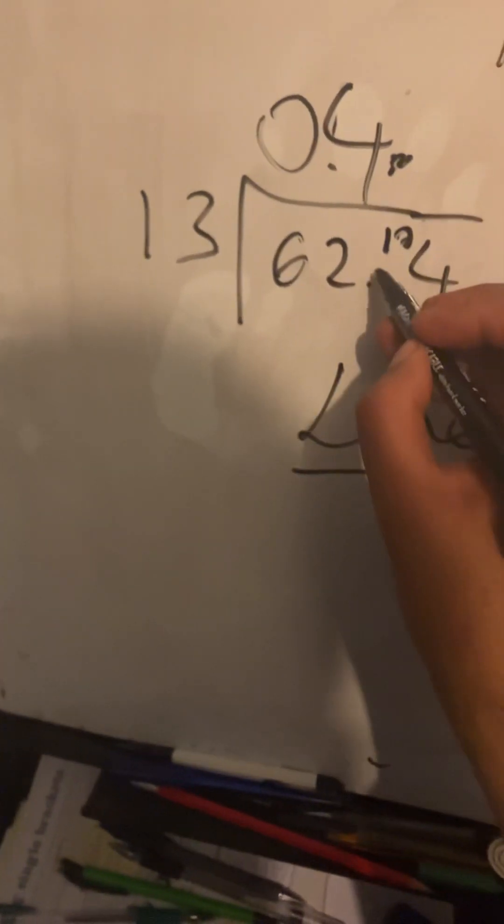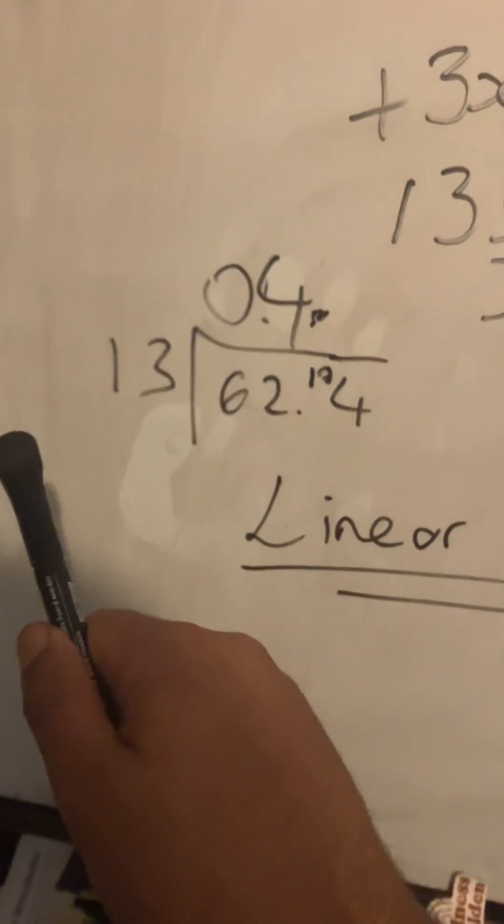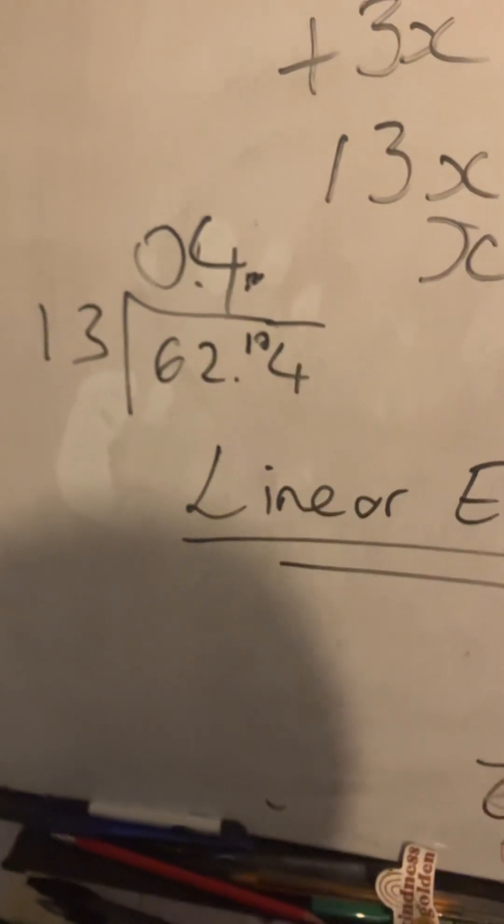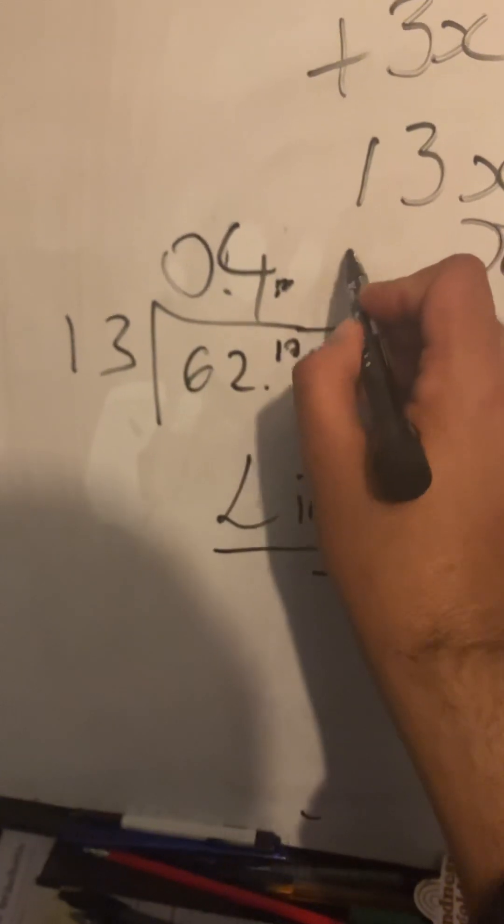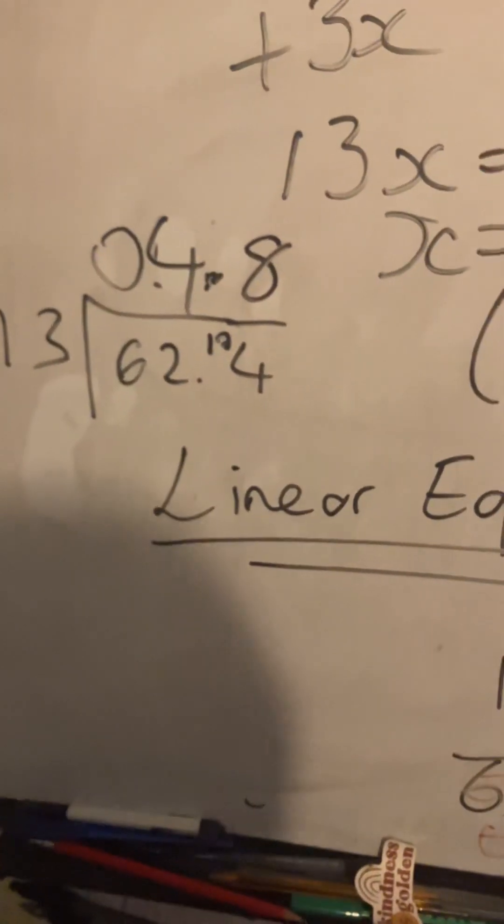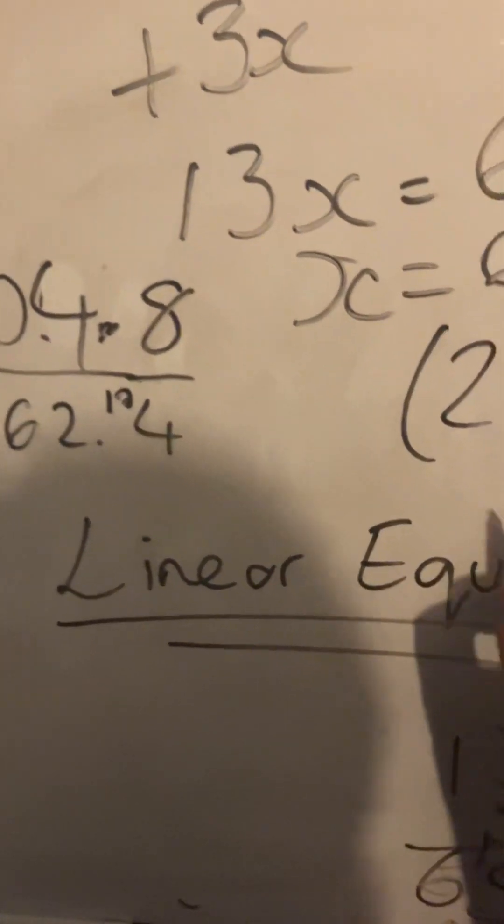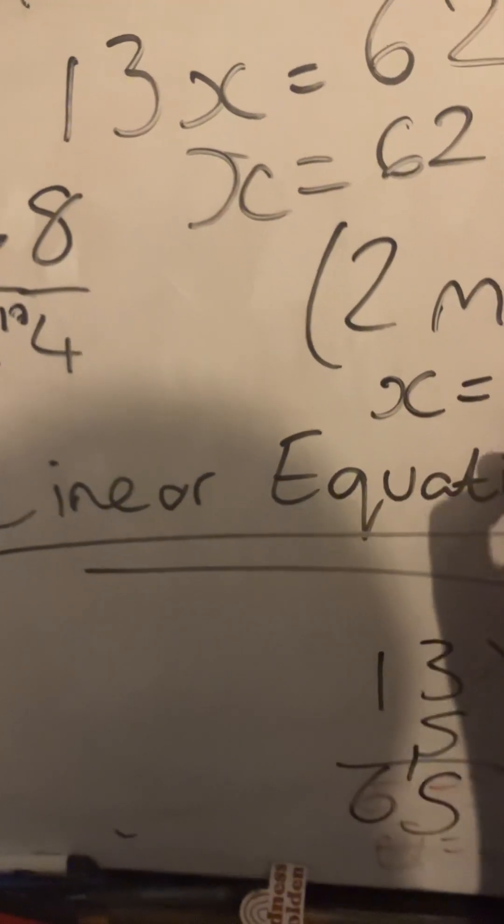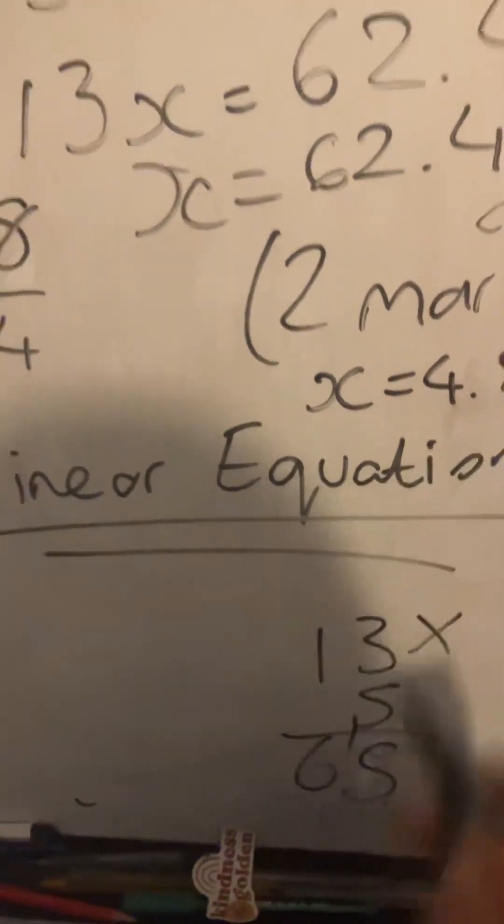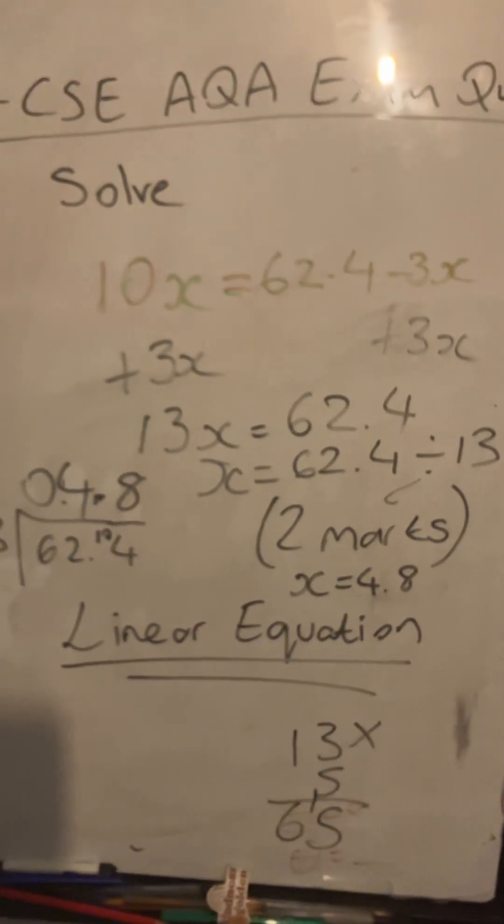13 into 104, so put the decimal point there. 13 times 8 gives me 104. So your answer is x is equal to 4.8, and that's the solution to that equation.